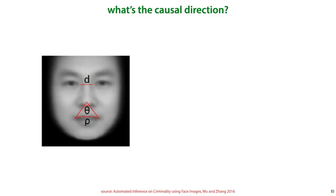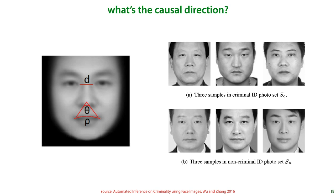A related question you should ask, when you find that you can successfully predict X from Y, is which causes which? This image shows a feature that researchers found when attempting to predict criminality based on a dataset of faces of criminals and non-criminals. One of their findings is that the angle made by the corners of the mouth and the tip of the nose is a highly predictive feature. The authors suggest that such facial features are indicative of criminality. However, when we look at the dataset, it's not the features of the face so much as the expression that differs. In the non-criminal photographs, the subjects hold a light smile, whereas in the criminal set, the expressions have a more explicitly relaxed jaw. What we're seeing here are not facial features so much as facial expressions.